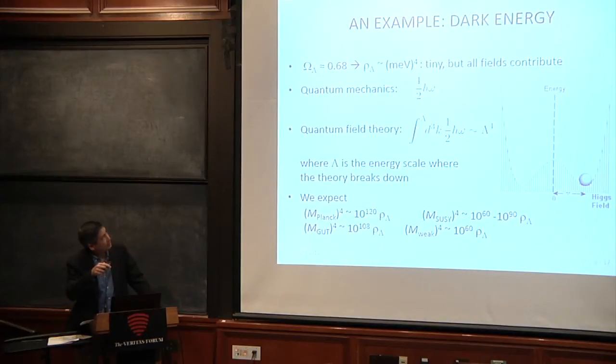That composition of the universe corresponds to an energy density of milli electron volts to the fourth power. This is some unit that particle physicists like but it's a very small number. At the same time all the fields contribute to it. Now at Caltech I can assume this is well-known, but in quantum mechanics there's something called zero point energy because there's a jitter you can't get rid of and so there's always some sort of minimal energy to particles, this one half h bar omega.